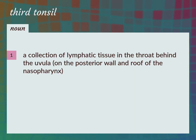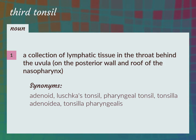A collection of lymphatic tissue in the throat behind the uvula, on the posterior wall and roof of the nasopharynx. Adenoid. Lushka's tonsil. Pharyngeal tonsil. Tonsilla adenoidea. Tonsilla pharyngealis.